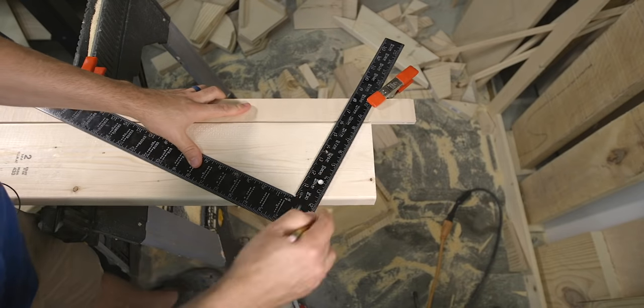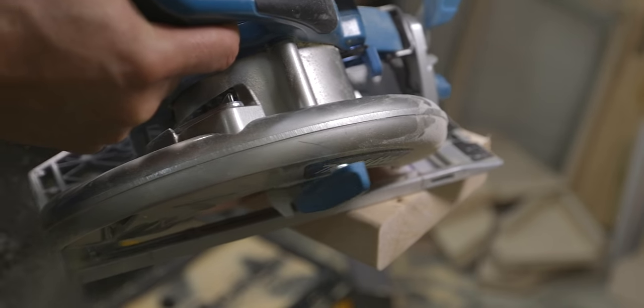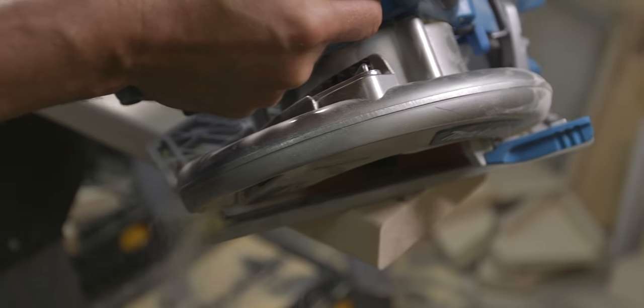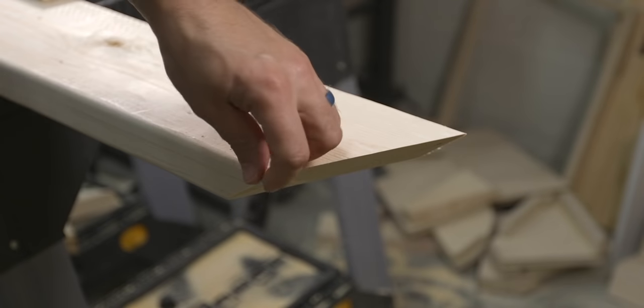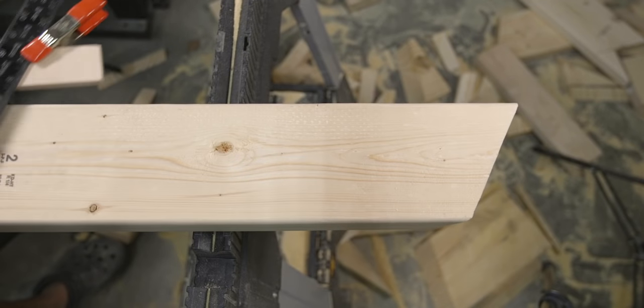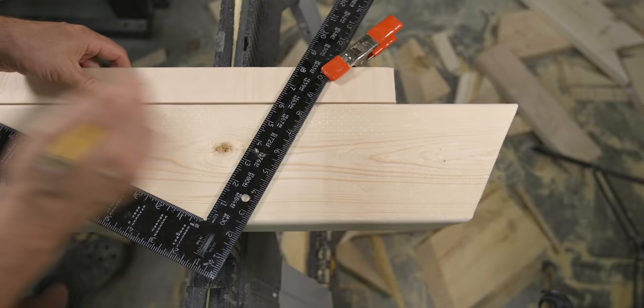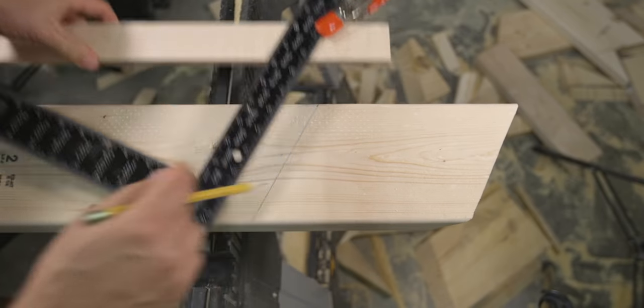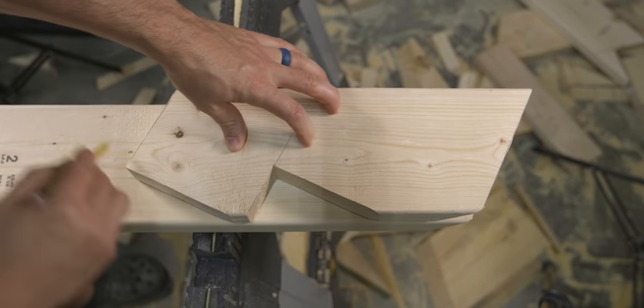It starts by laying out the top angle set to your six and twelve. Set the saw at a 45 degree bevel and make your cut. Measure down from the long point of that bevel eight and nine sixteenths and draw another line. From there, line up your pattern, trace it out, and make the cuts.